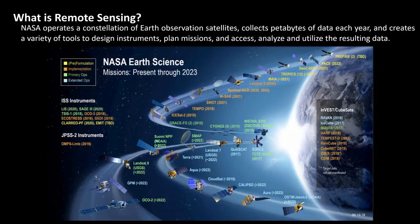On this image, you'll see a snapshot of the Earth science missions that are currently active, as well as those planned to be launched through the year 2023. These range from very large, very sophisticated satellites that carry an array of different instruments on board, to much smaller CubeSats that are the new frontier of NASA's Earth Science program.